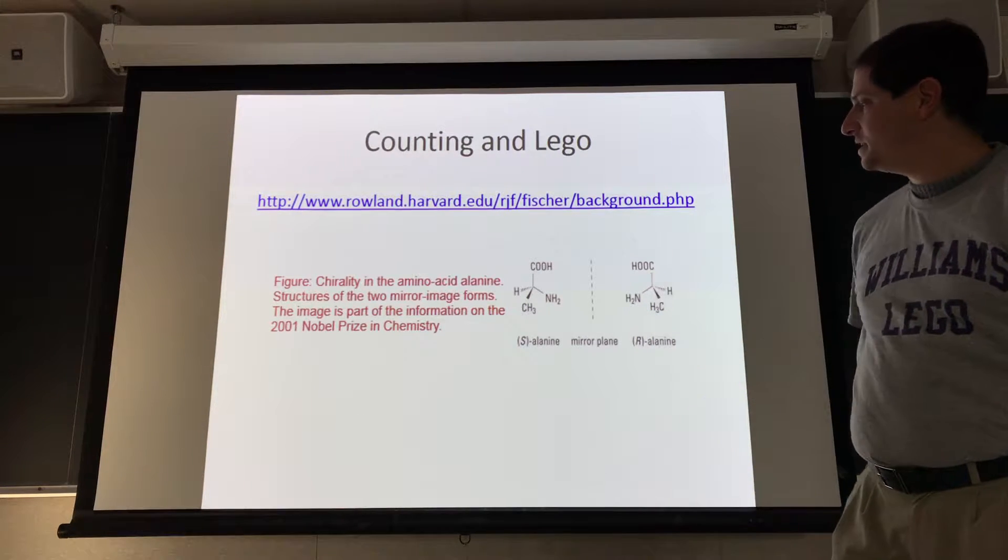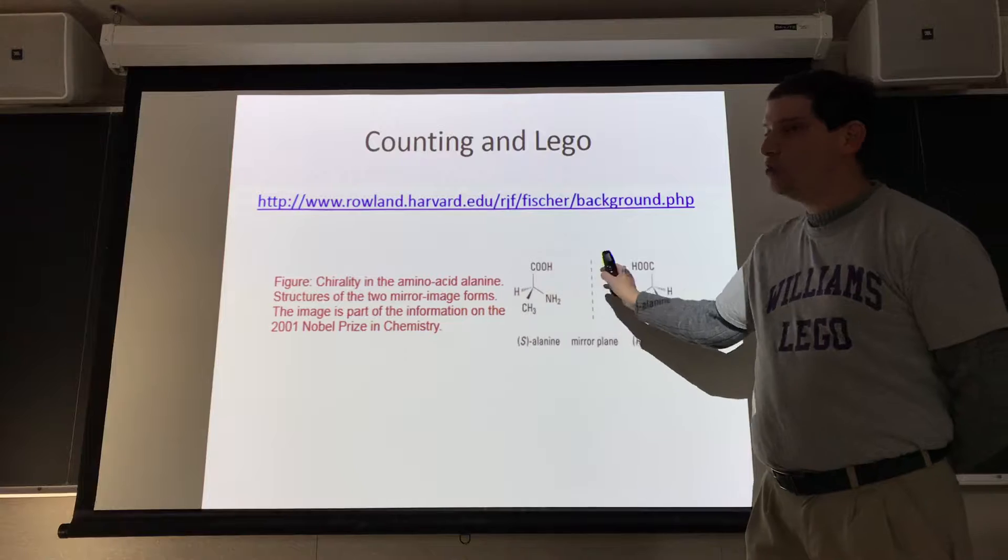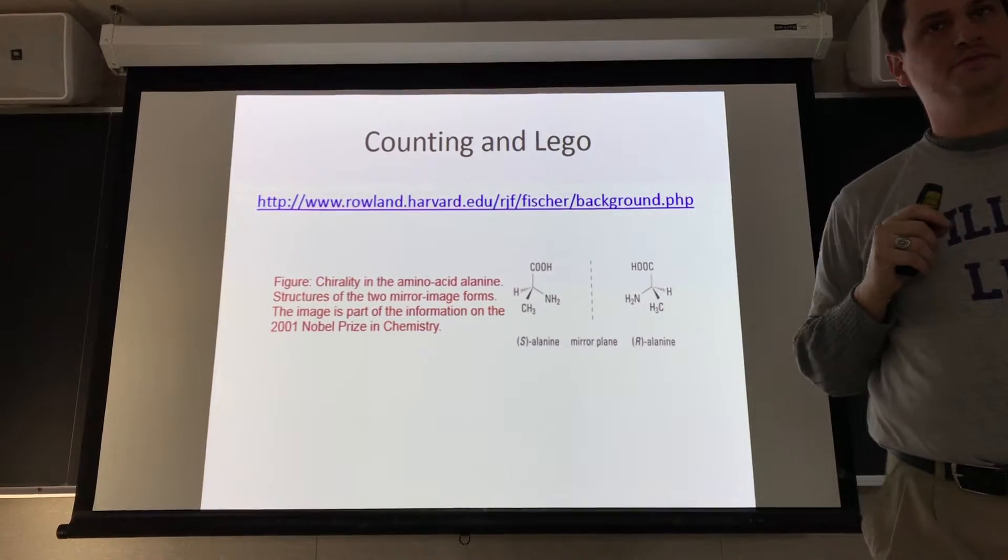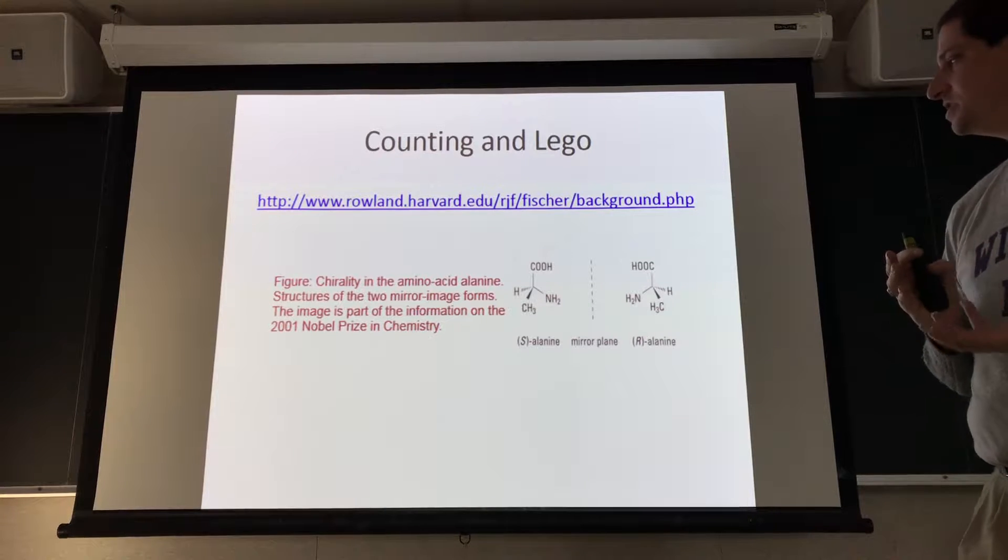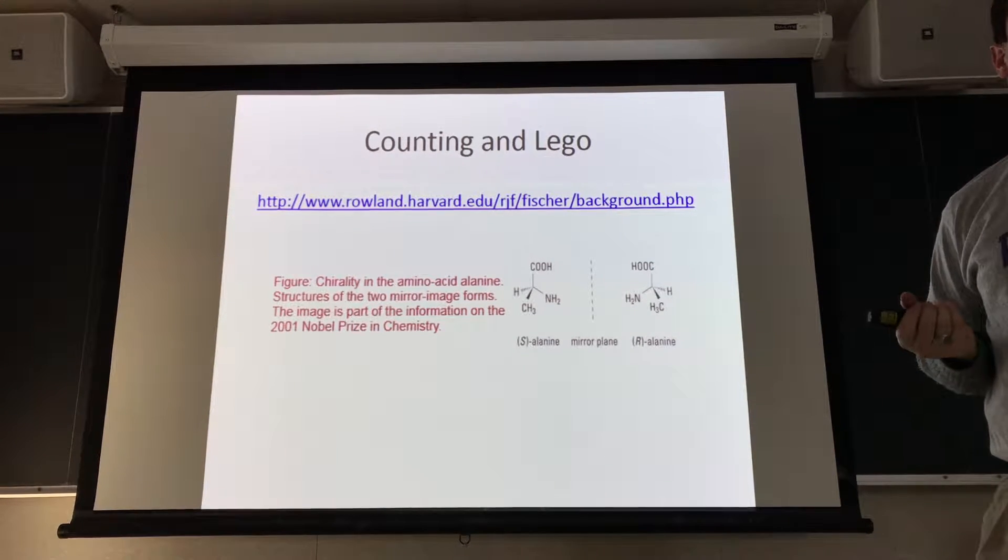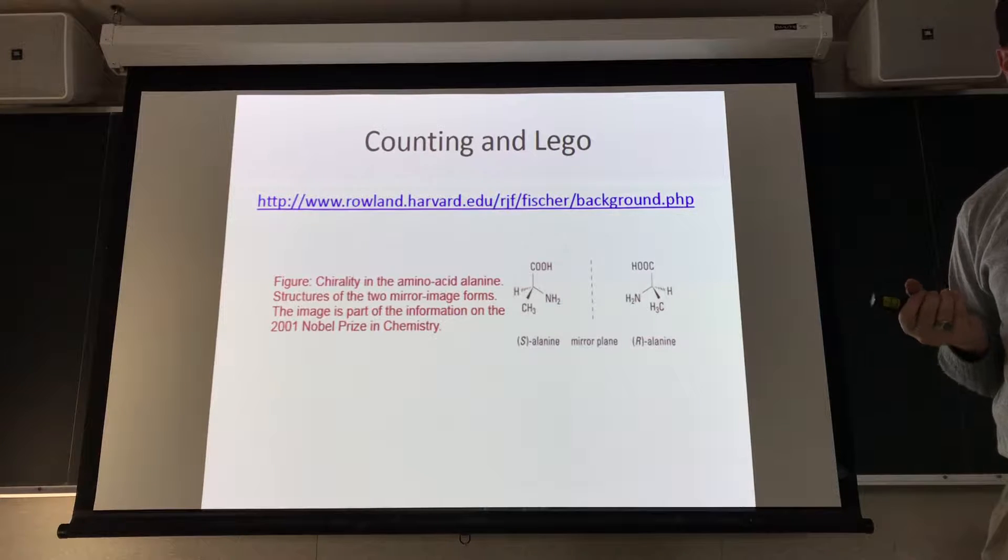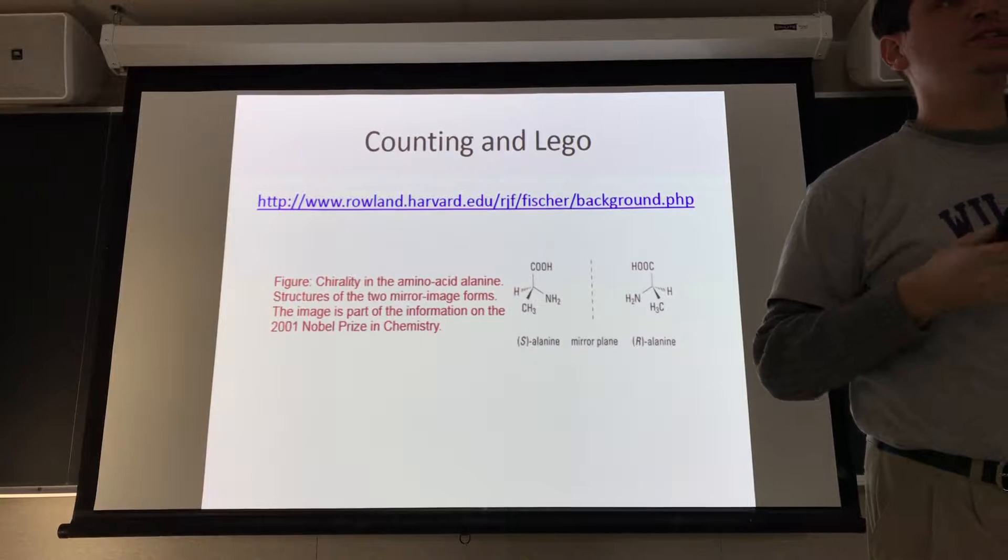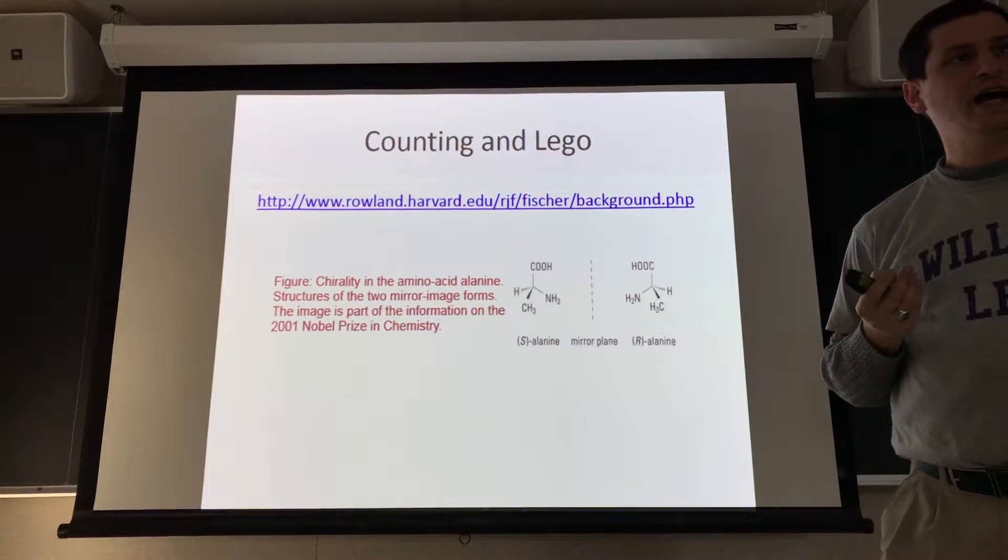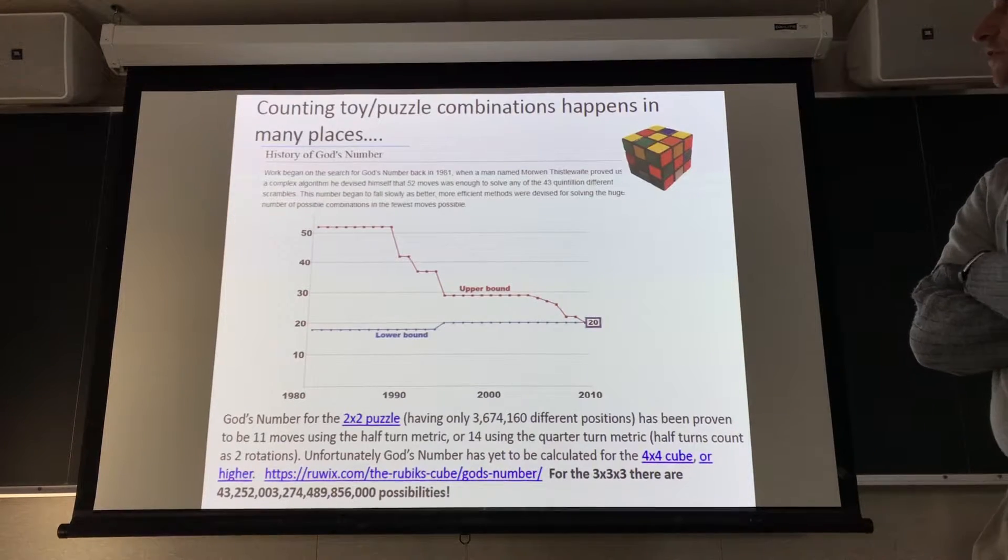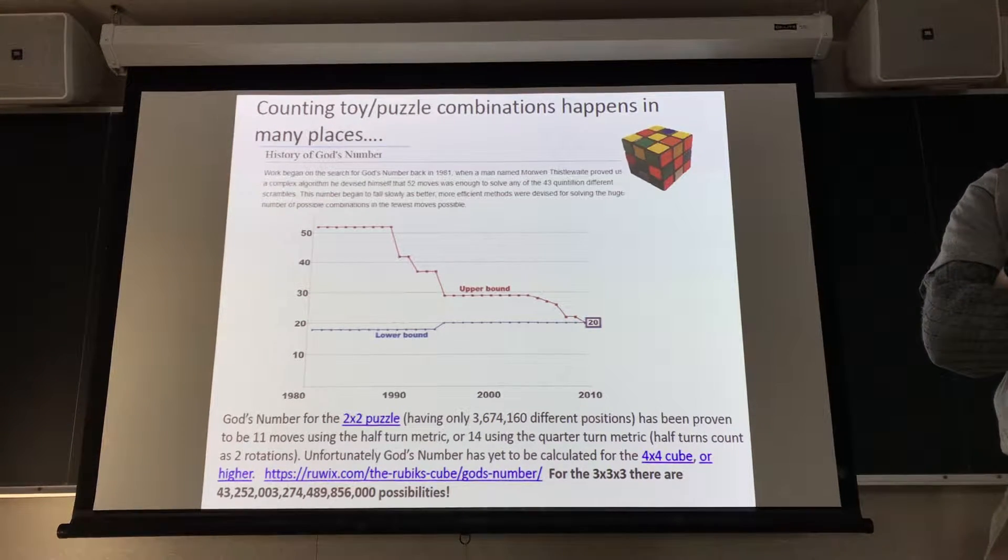Going back to this slide, this is how do we count things? These are two mirror images of the same compound. Well, okay, not quite, I guess not the same compound, but it has the same atoms. But they're arranged in a mirror image of each other, and they will have very different properties. We talked a little bit about this early in the semester. How will I count things like this?